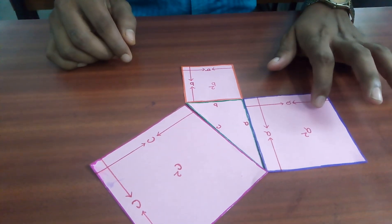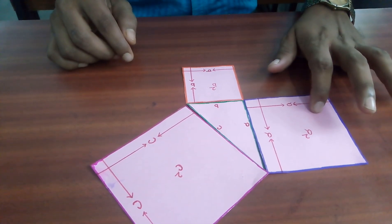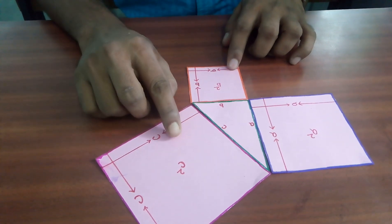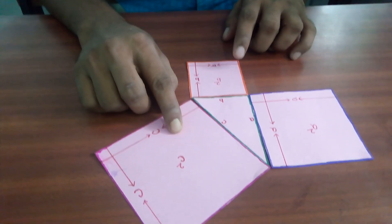So, the area of this square is A square square unit, area of this square is B square square unit and area of this square is C square square unit.